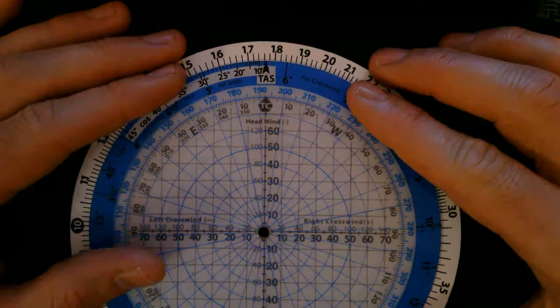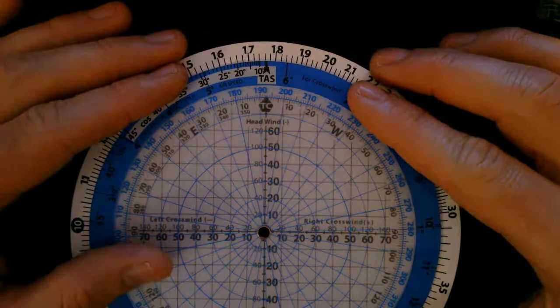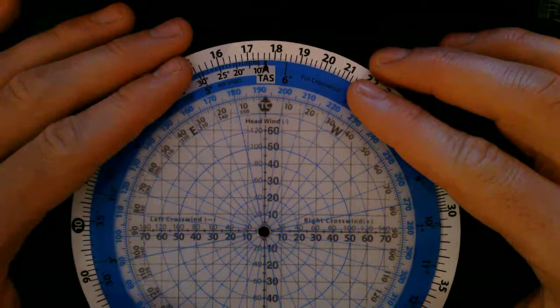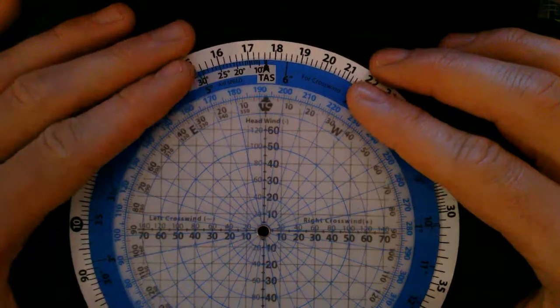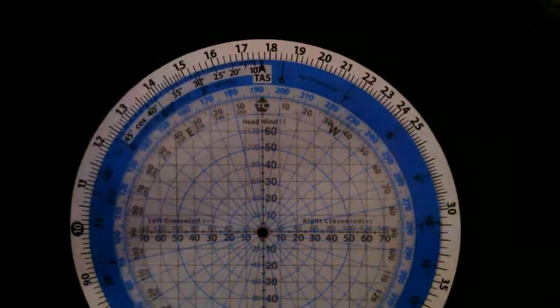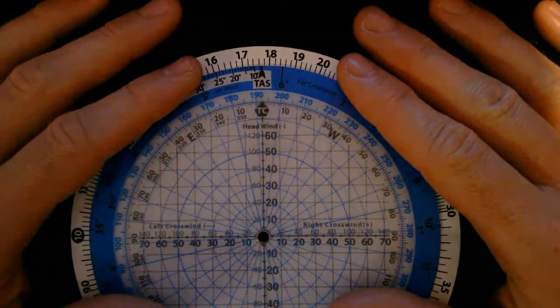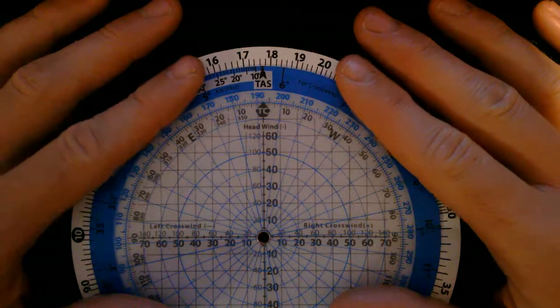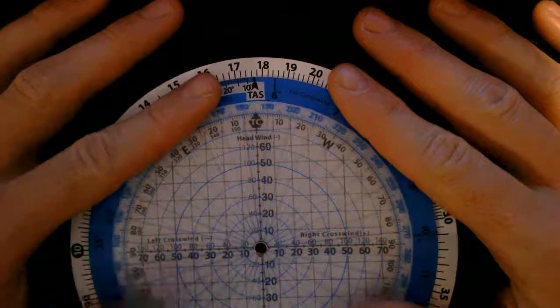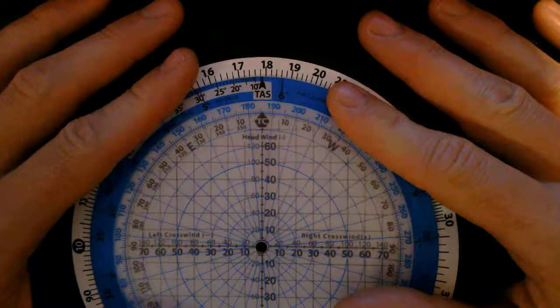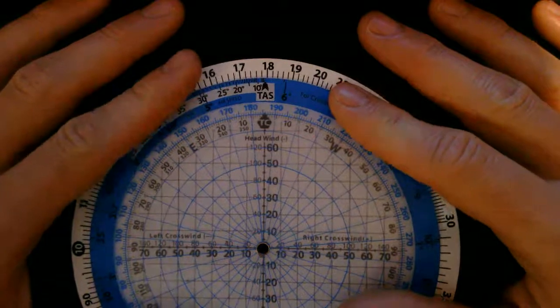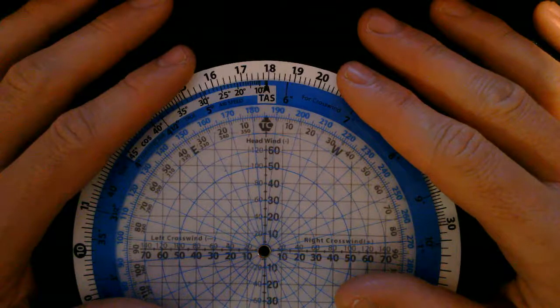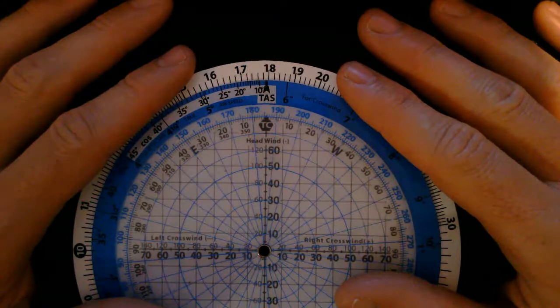If your crosswind component is less than 10% of your true airspeed, you know you have less than six degrees of crab. And if it's greater than 10% of your true airspeed, you have greater than six degrees of crab. That usually takes care of your estimation right off the bat. If you're in a pinch, use that 10% rule, do the over under thing on it and usually they'll get you right.